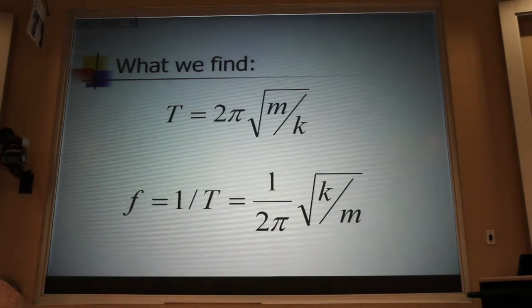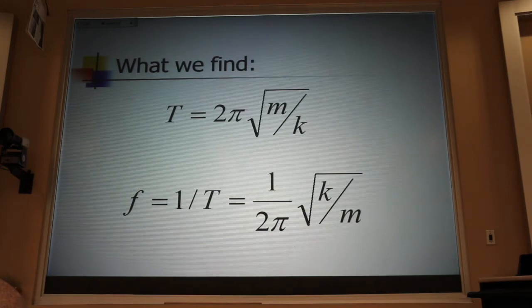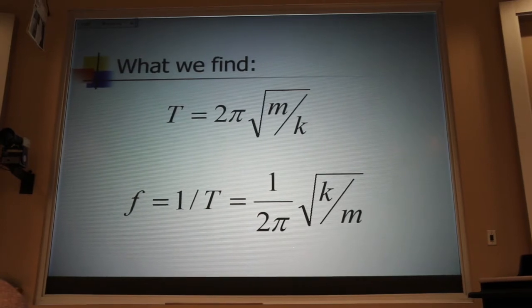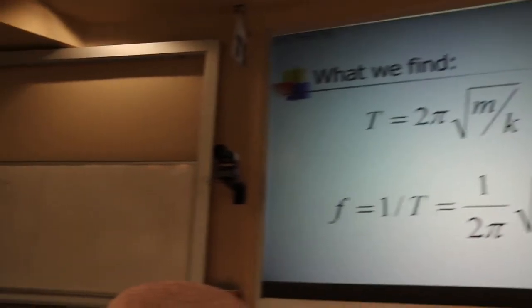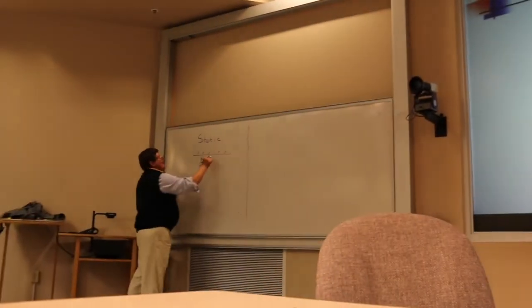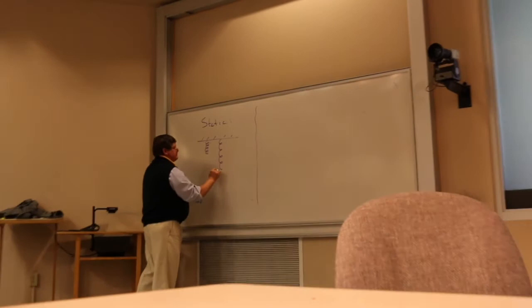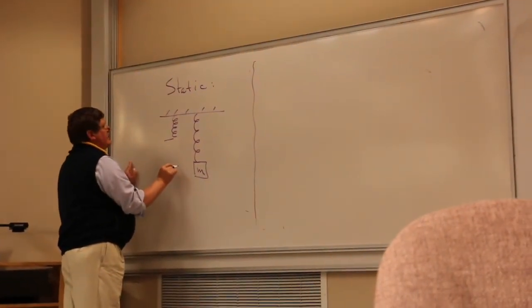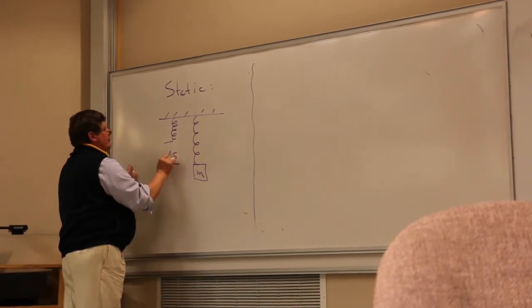When we're trying to find a spring constant, that gives us two ways to go about it. The first way, the 205 method, is called the static method. And that method just has you take the spring out of the box from the factory, hang the block on it of mass M, and see how much the spring stretches.